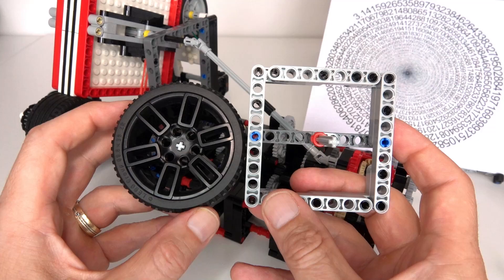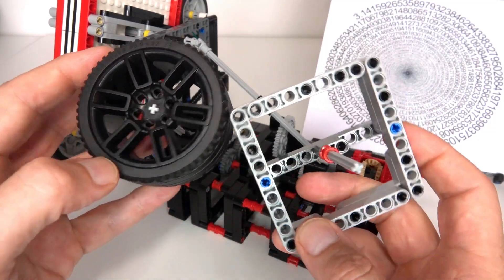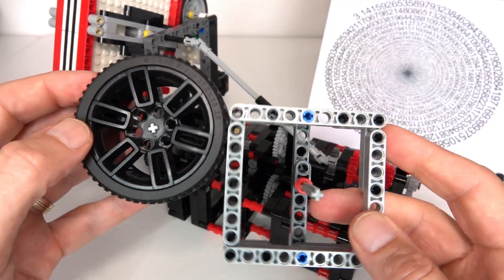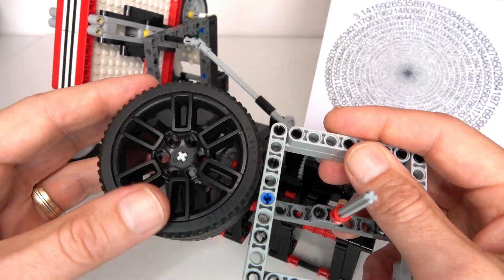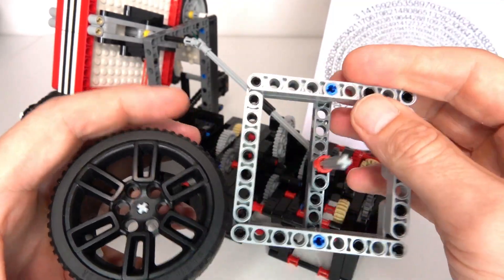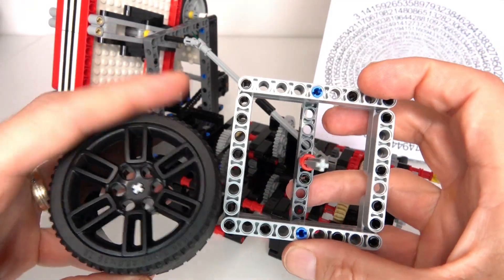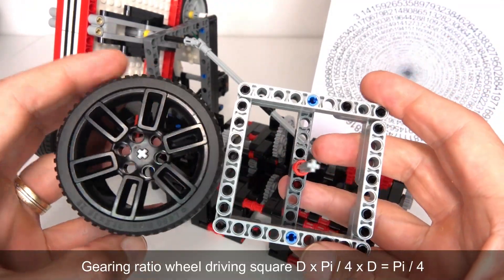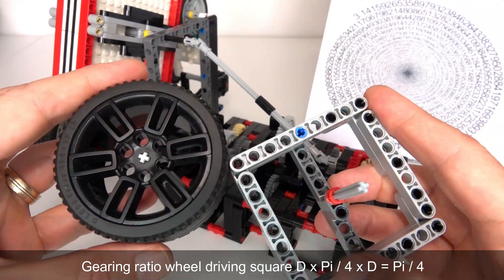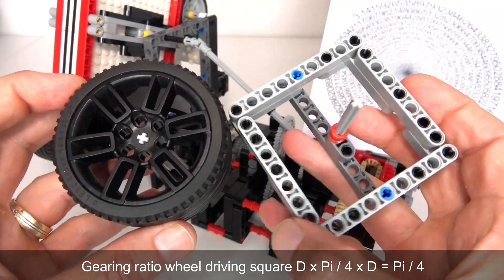If this left wheel drives the square on the right, then we have the ratio of pi to the circumference, which is pi times the diameter divided by four diameters. So we'll get pi over four as the ratio between this axle and that axle, which is exactly what I needed.